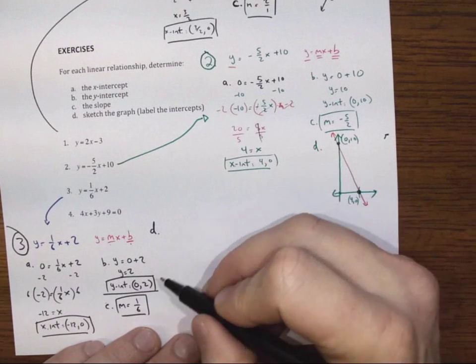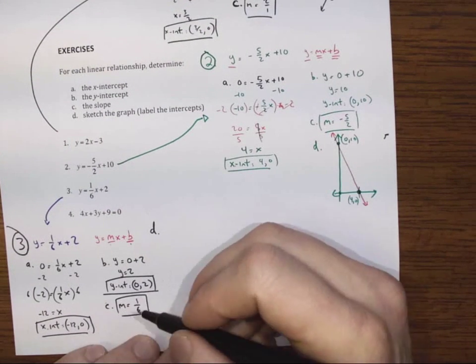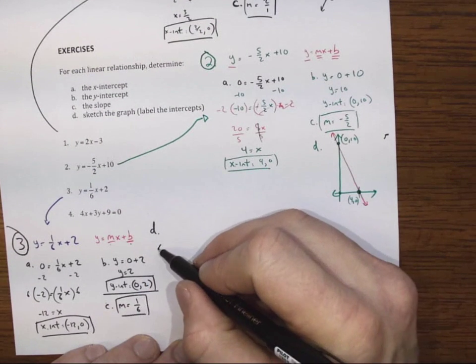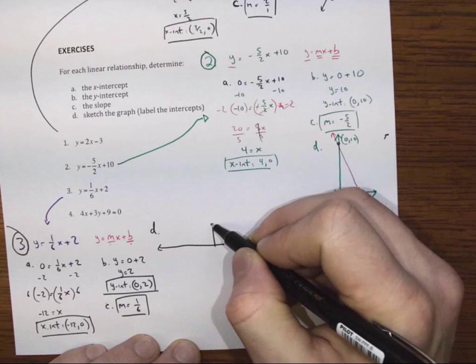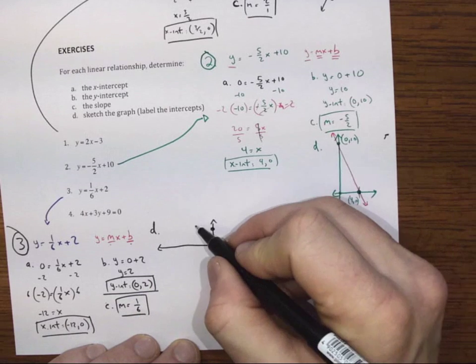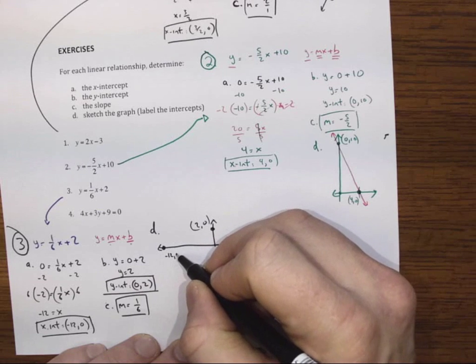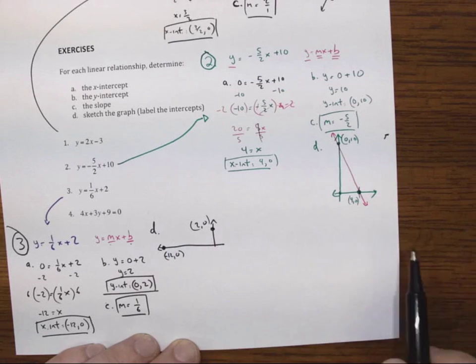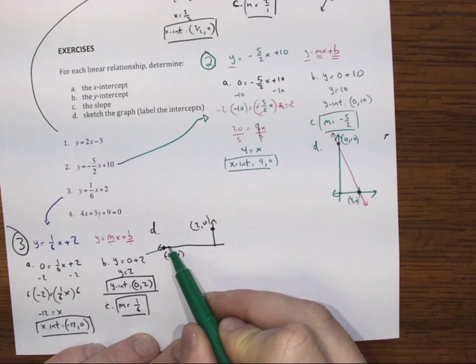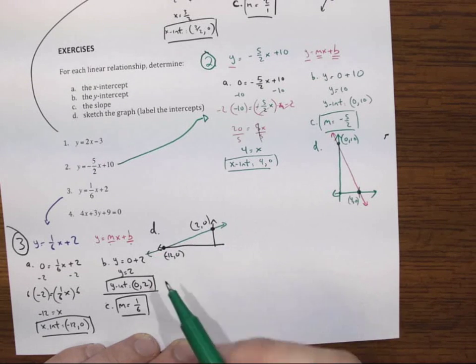And that's going to have the x-intercept of negative 12, y-intercept of 2. And it's negative 12, 0. There we go.